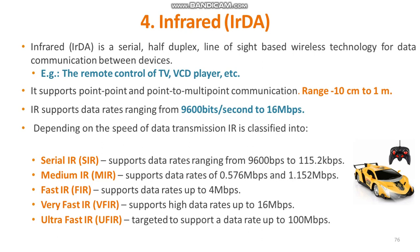Depending upon the speed of data transmission, it is divided into five classifications. The first one is Serial IR, which supports data rates from 9600 bps to 115.2 kilobits per second. Similarly, it is divided for different data rates into medium, fast, very fast, and ultra-fast IR, supporting up to 100 megabits per second.